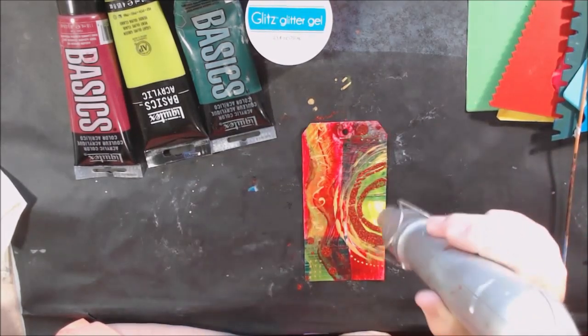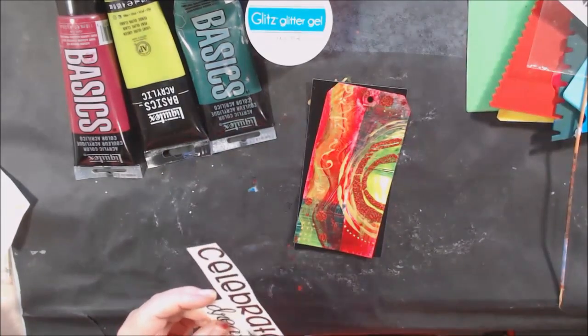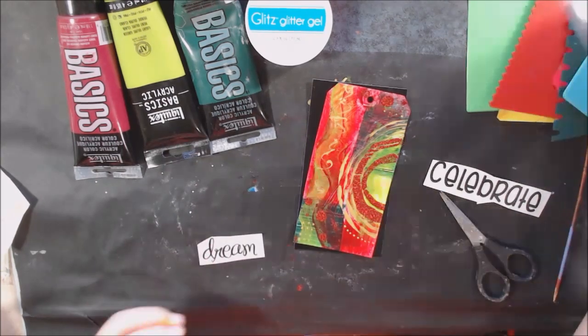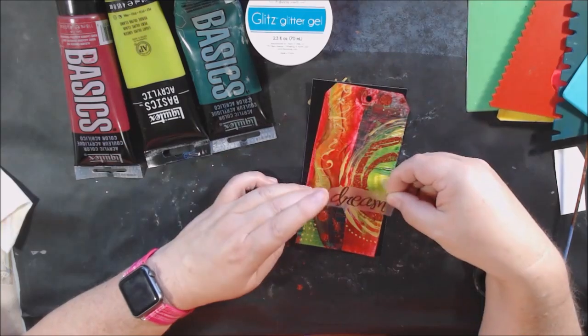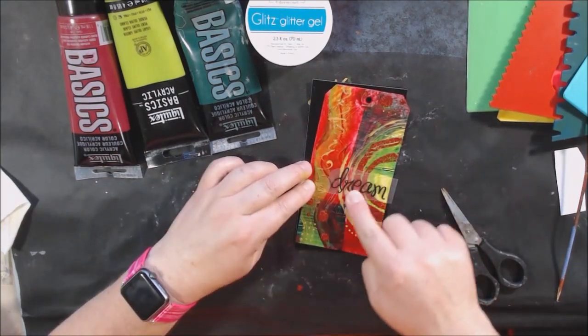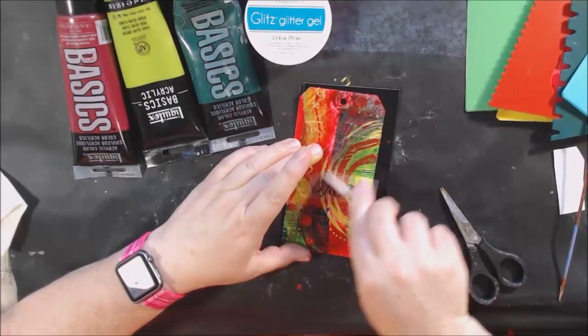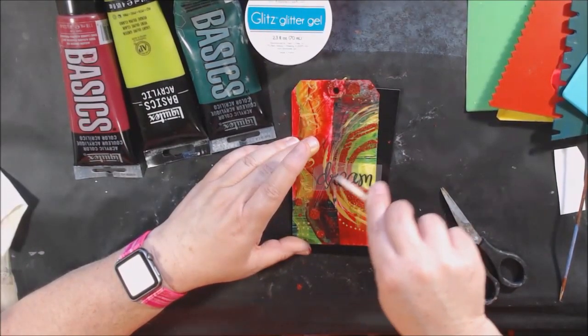Then I took those two stencils and immediately washed them off in the sink because once that stuff gets on there and sticks to your stencil it makes it bumpy. I still thought this needed something so I decided to add a rub-on word that says dream.